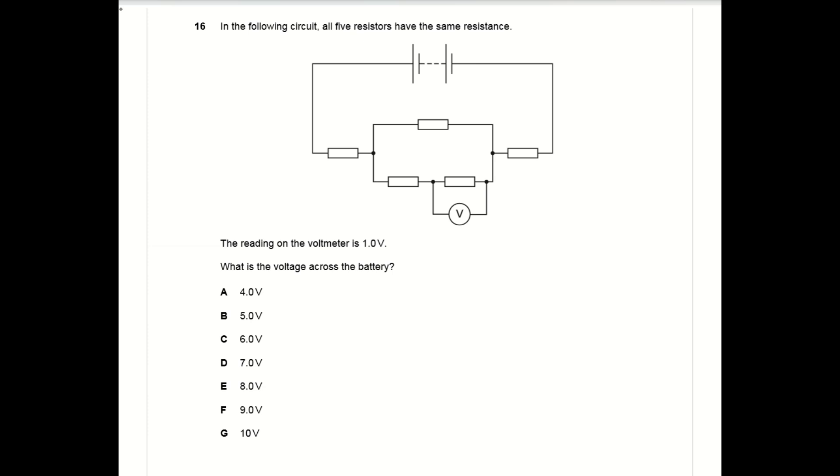For question 16, you know all five resistors have the same resistance, so you can set that equal to r. Using that value of r you can work out the resistance of the parallel part of the circuit. You have r on the top, two r on the bottom, and that comes out to two r over three. You know there's one volt across the resistor on the bottom branch, so the resistor next to it also must have one volt across it because they're identical.